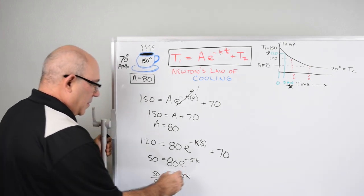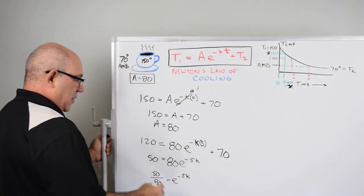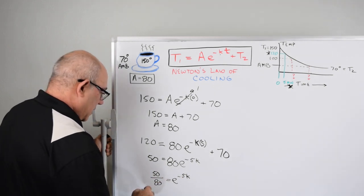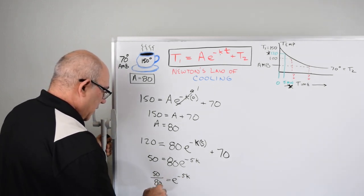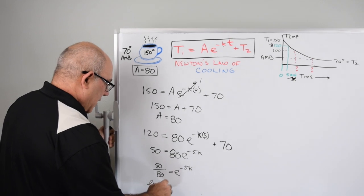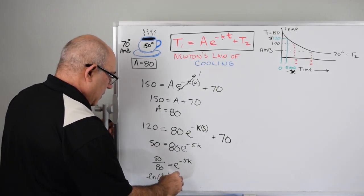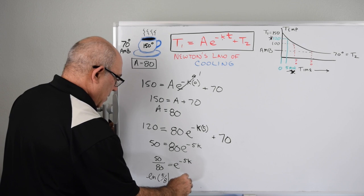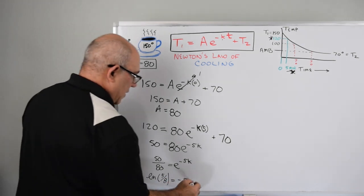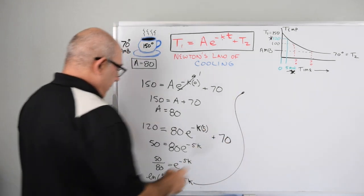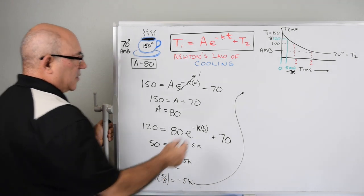Now we get to solve this with logarithms, so we take the log of both sides. The log of five eighths equals minus 5K. If we bring this up, we have the log of 0.625.